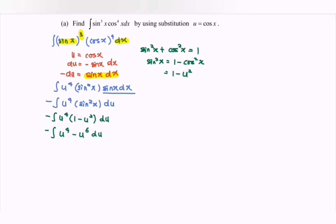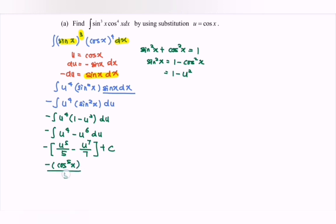Now integrating the situation: negative bracket u to the power of 5 over 5, minus u to the power of 7 over 7, plus c. Substituting u back as cos x and expanding, we have negative bracket cos to the power of 5 x over 5, plus bracket cos to the power of 7 x over 7, plus c. That is our answer for question A.